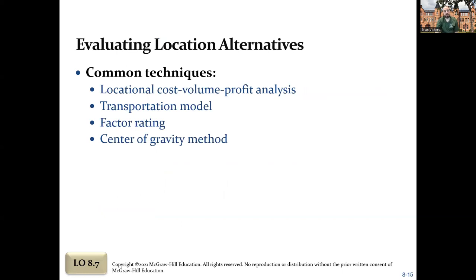Evaluating location alternatives — common techniques include cost-volume-profit analysis, which we covered in Chapter 5: fixed cost plus variable cost times production. Based on where you locate, raw materials might cost more or shipping might raise the variable cost. We're skipping those problems in Chapter 8 since we've already covered it — just know it might come up on a quiz. The transportation model maps out transportation costs across various locations, but that's really a type of linear programming we're not covering in depth in this class at this time.